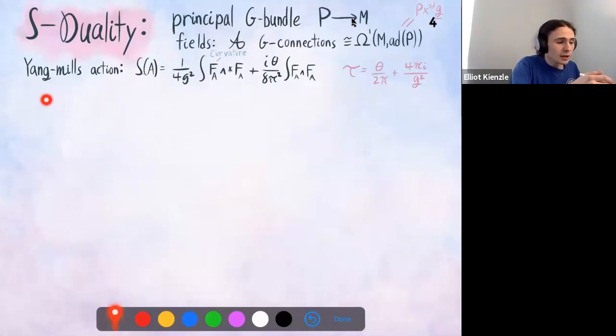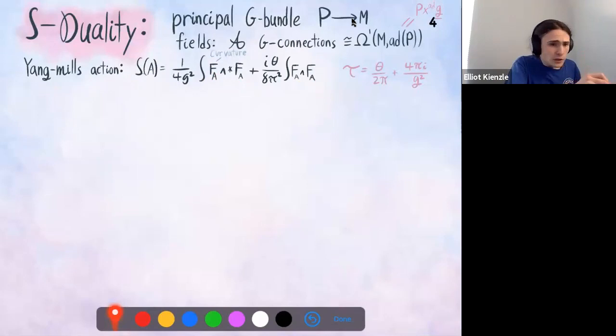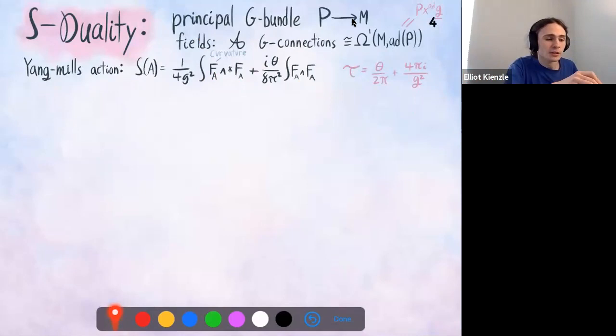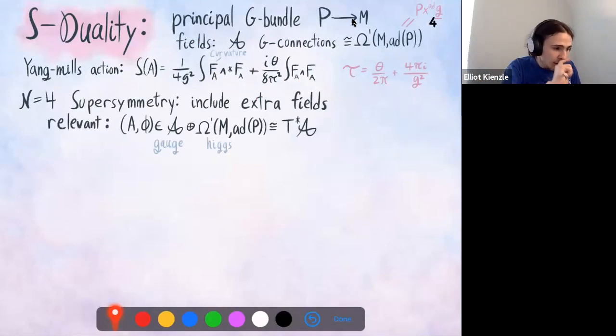We're considering the Yang-Mills action, which has two terms. Essentially this term is the Yang-Mills term — it corresponds to the norm squared of the curvature of our connection. We also have a topological term. In front of each of these terms we have a coupling constant, determining basically the strength of the associated interaction. It's going to be convenient to package this all up into one nice complex coupling constant τ.